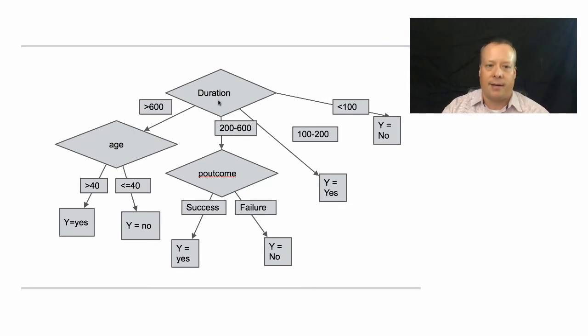So the way you read these diagrams is that duration greater than 600 means you check the age. And if the age is greater than 40, then you get a yes. If it's less than 40, you get a no. If the duration is under 100, then it's just no.